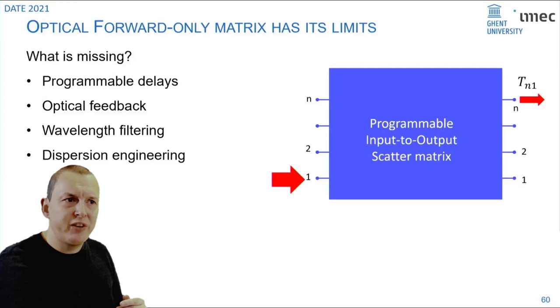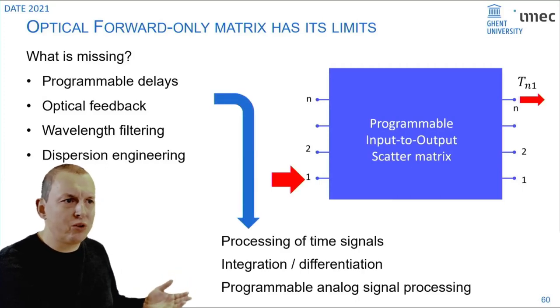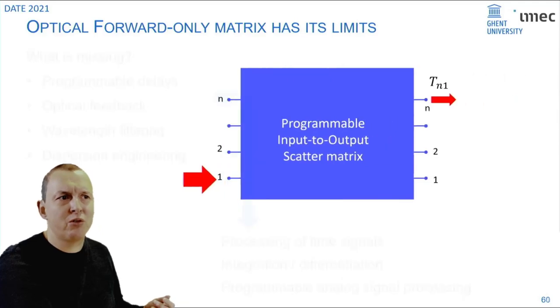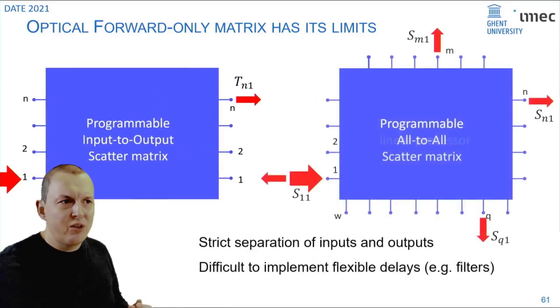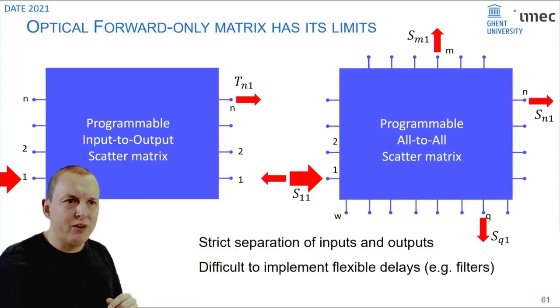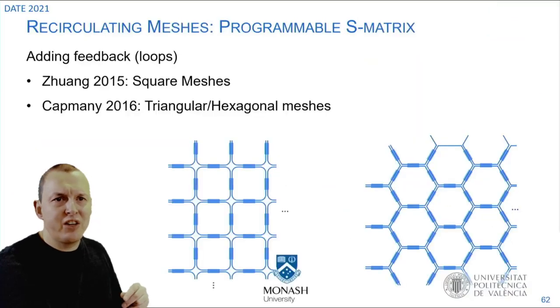Basically you can call that dispersion engineering that would allow you to do also processing of time signals, time operations like integration or differentiation, or essentially using your chip as a general analog signal processor. To enable that you need to go to a somewhat more complex architecture which not just has separated inputs and outputs, but essentially can couple any port to any port. The architecture that we use there is a recirculating mesh.